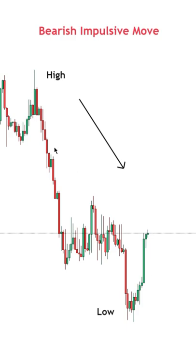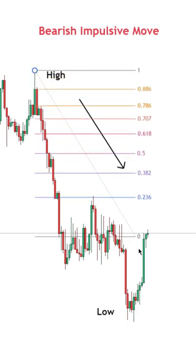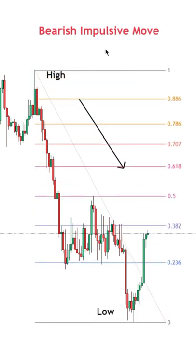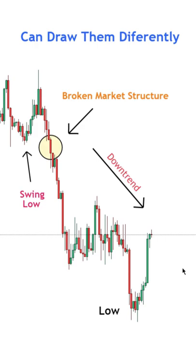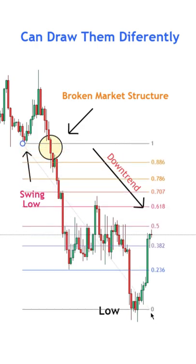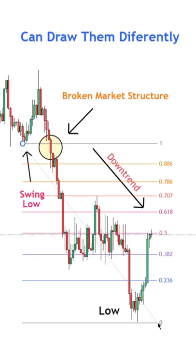The second tip is that when it comes to drawing Fibonacci, we usually connect the highs and lows of entire impulsive moves. But sometimes we can also start by connecting the first point to a major swing high or a major swing low that ended up being broken through within a trend.